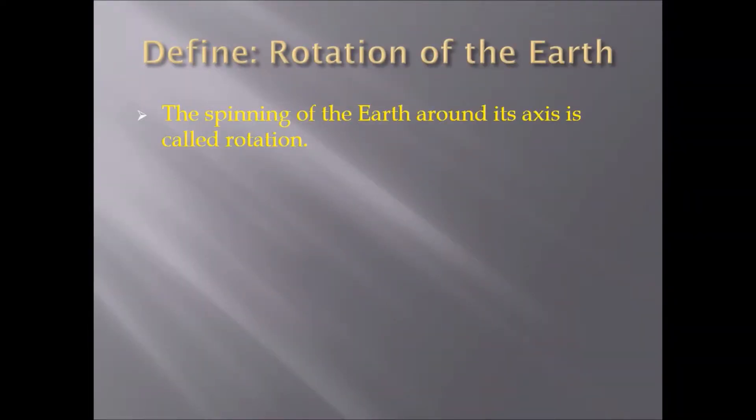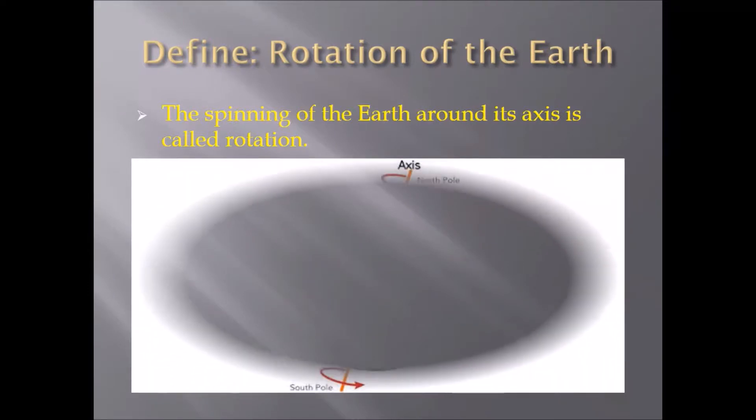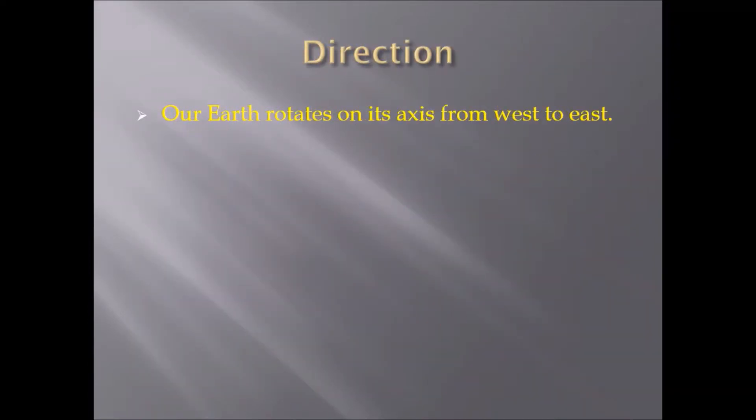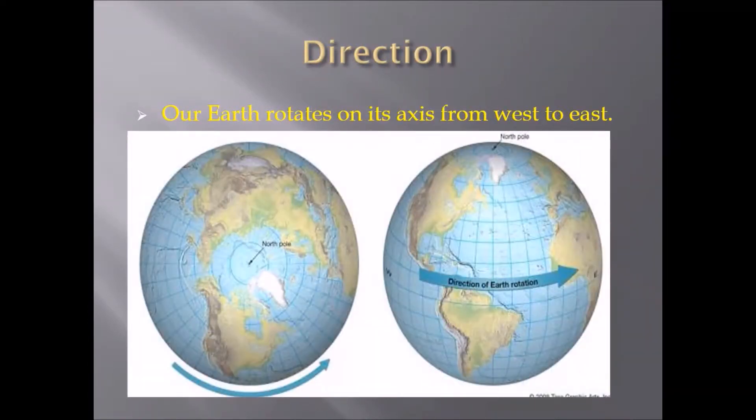The spinning of the Earth around its axis is called rotation. What is the direction of rotation of the Earth? Our Earth rotates on its axis from west to east.